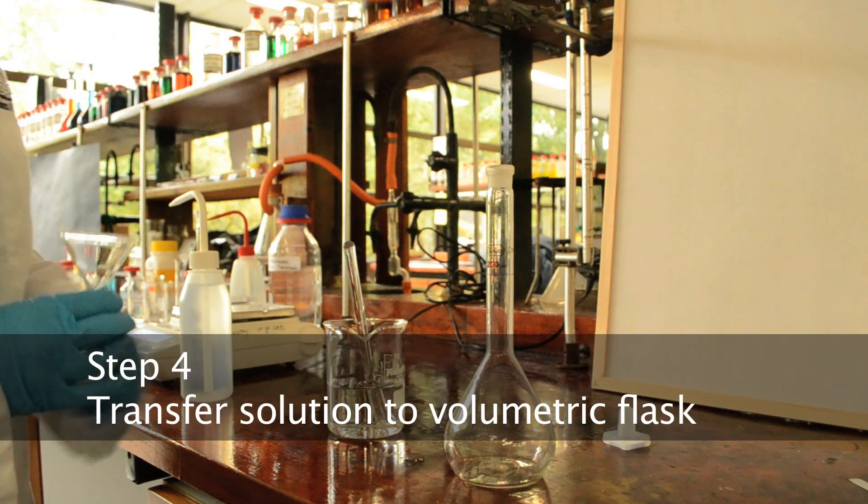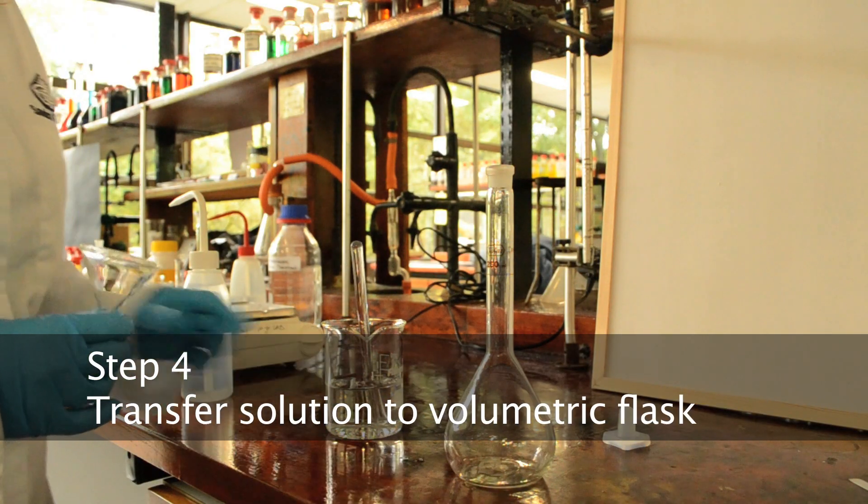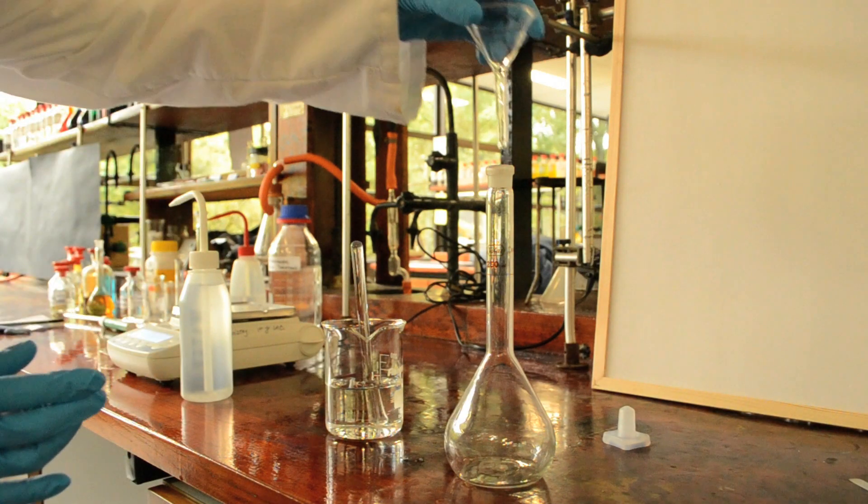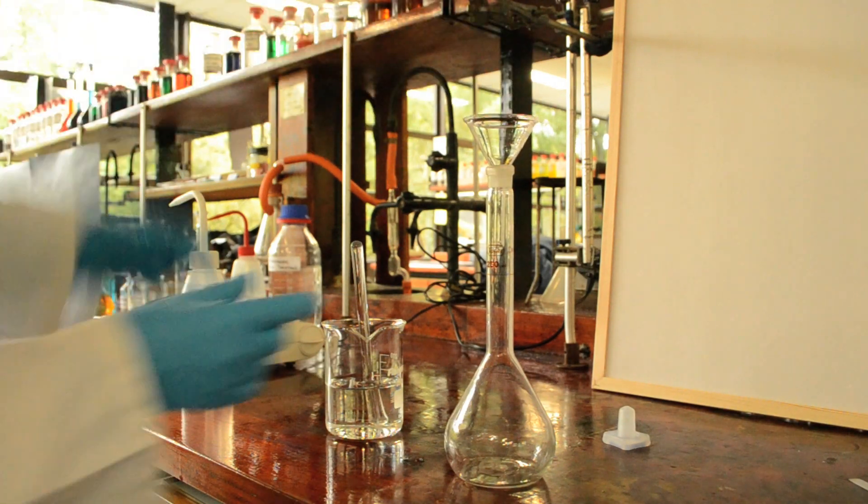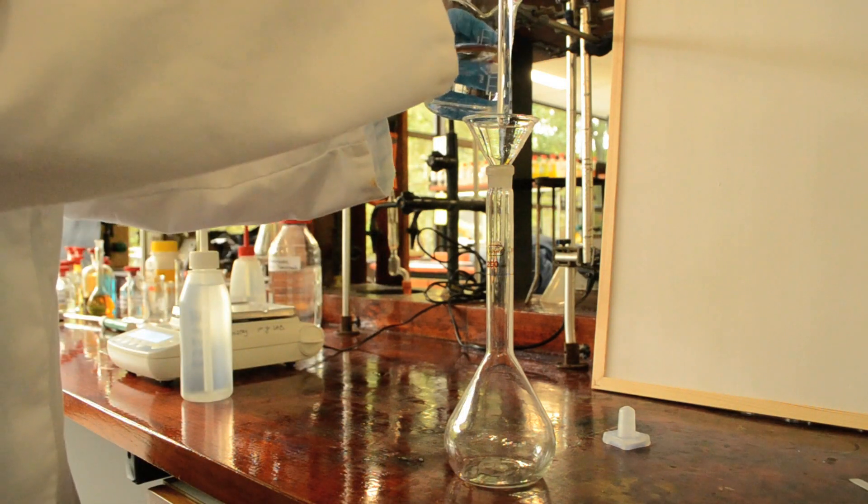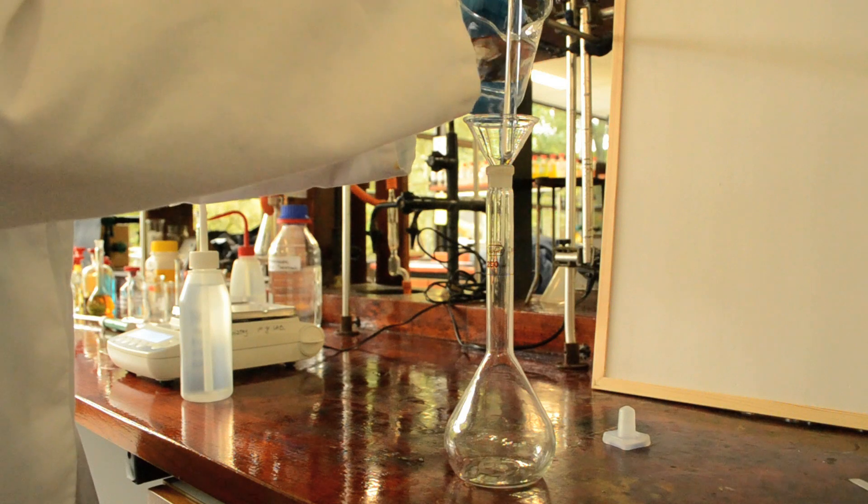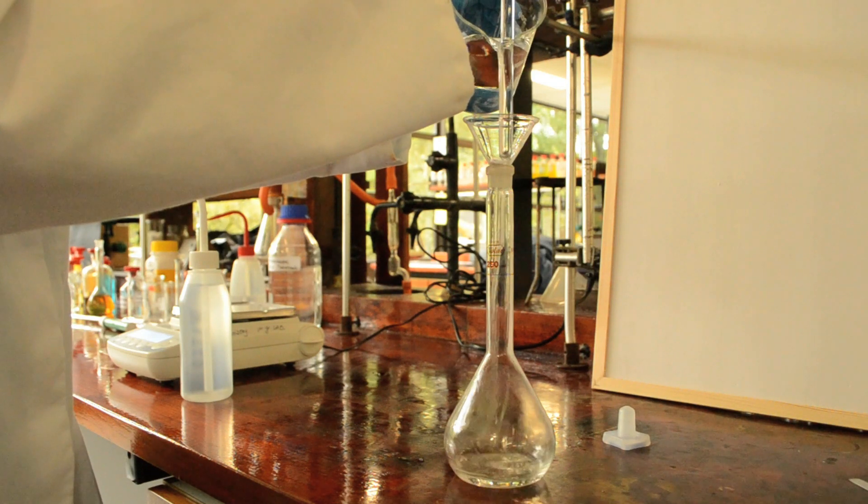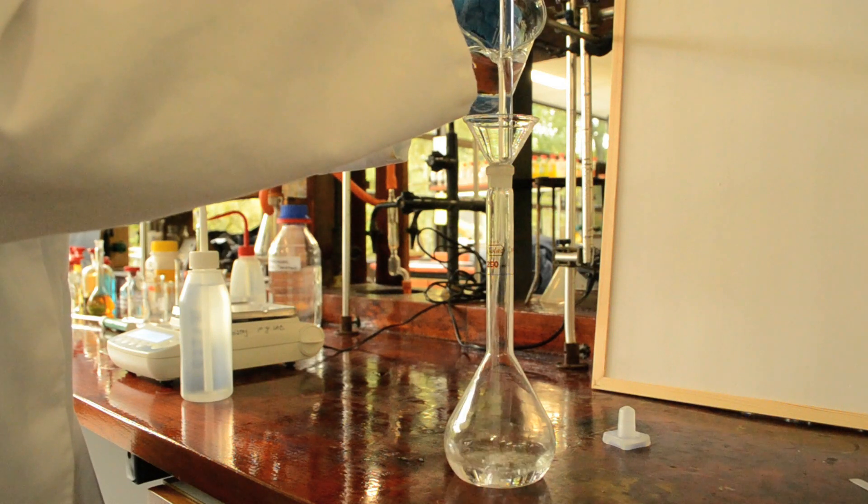I'm going to transfer my dissolved solution of sodium carbonate into a 250 ml volumetric flask. To do this, I use a funnel and I'm also going to use my glass stirring rod. This helps to prevent spillages. So slowly transferring, ensuring all of the solution makes its way into the volumetric flask.